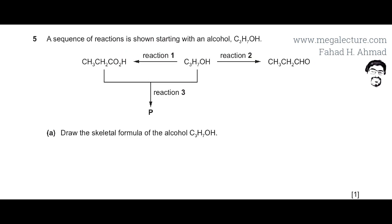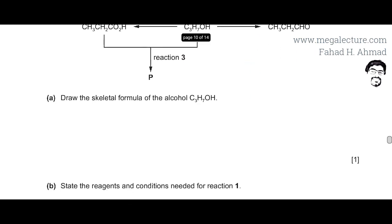It must be at the end because the carboxylic acid is formed by the carbon atom at the end. The aldehyde is also formed by the carbon atom at the end. So it's going to be propan-1-ol. Propan-1-ol has three carbon atoms with an OH group, and there would be two hydrogens attached to this, two hydrogens attached to this, and three hydrogens attached to this. Now we're supposed to draw the skeletal formula.